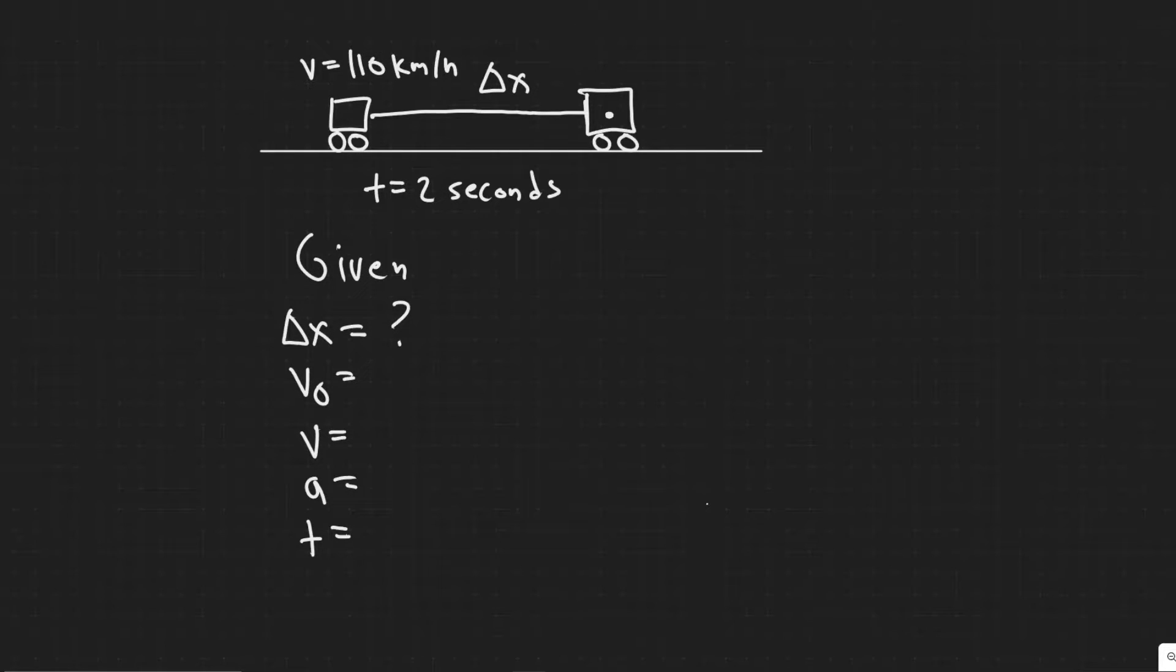We know the initial velocity, which is the velocity at the beginning of this interval, is 110 kilometers per hour. And then the final velocity, we don't know. So we're just going to leave it out.